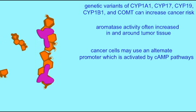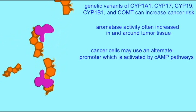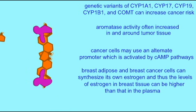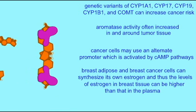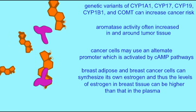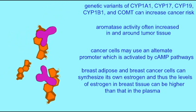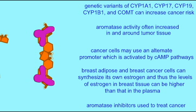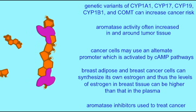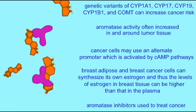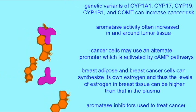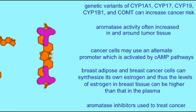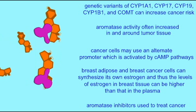The gene is sometimes changed in tumors so that different signals, such as those of cyclic AMP, activate the gene in cancer cells, which is unusual compared to normal cells. The adipose of the breast and the cancer cells in breasts can make their own estrogen, and thus the levels of estrogen in breast tissue and in the tissue of the tumor itself can be higher than that found elsewhere in the body, such as the blood plasma.